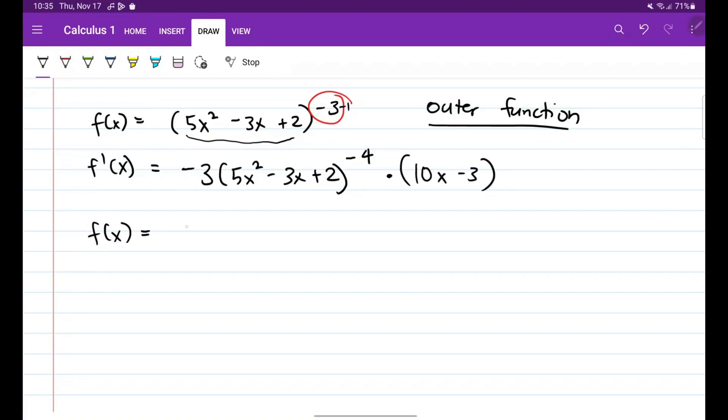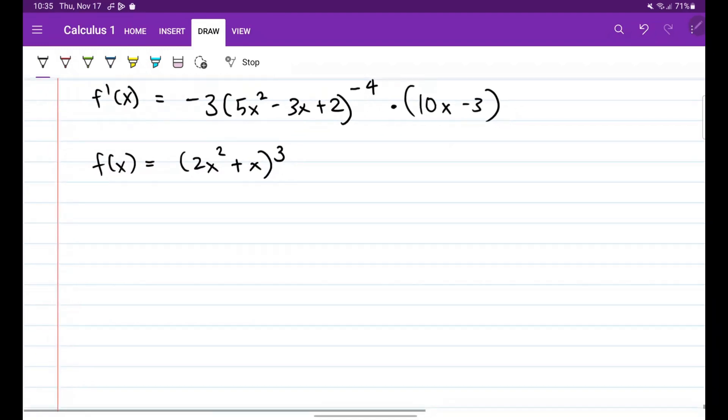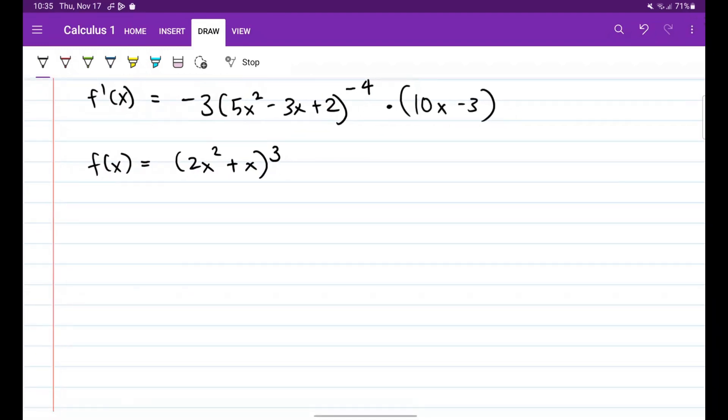Let's say you have f of x is equal to 2x squared plus x, raised to 3. So pagka ganito, again we look at the outermost function. So the outermost function is raised to 3.